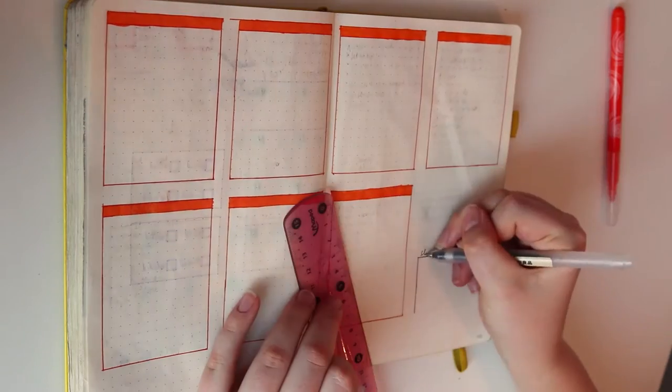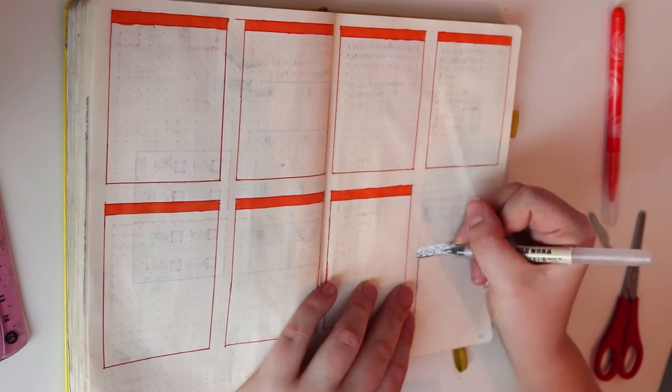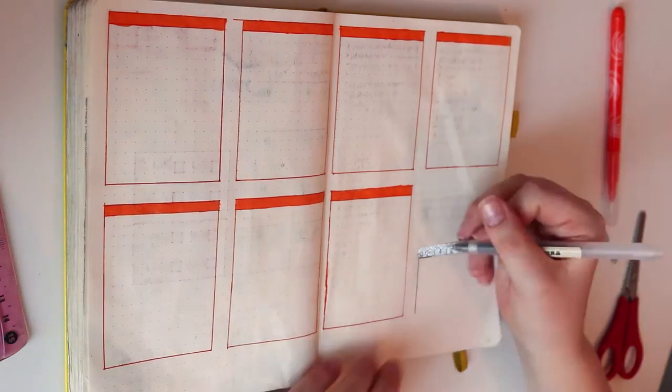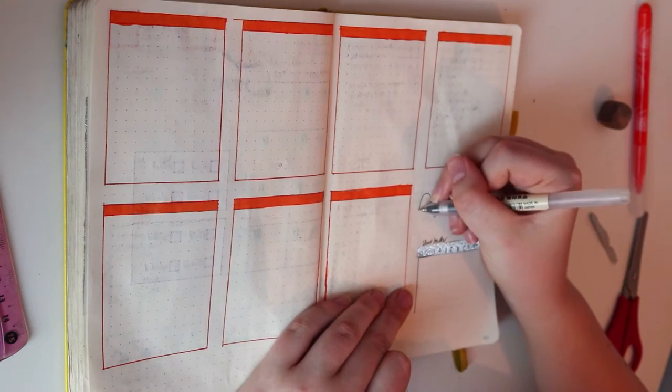As always I drew out my sleep tracker but this time I incorporated a sleeping ghost as I thought it would add a little something to the spread and I thought it would be cute. I made a little mistake here with my sleep tracker so I added some glittery silver tape which I got from Primark a while back in a pack of three.